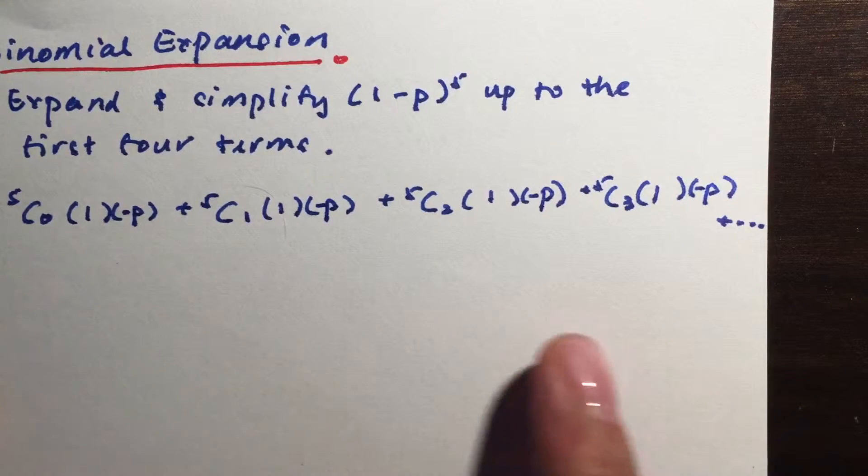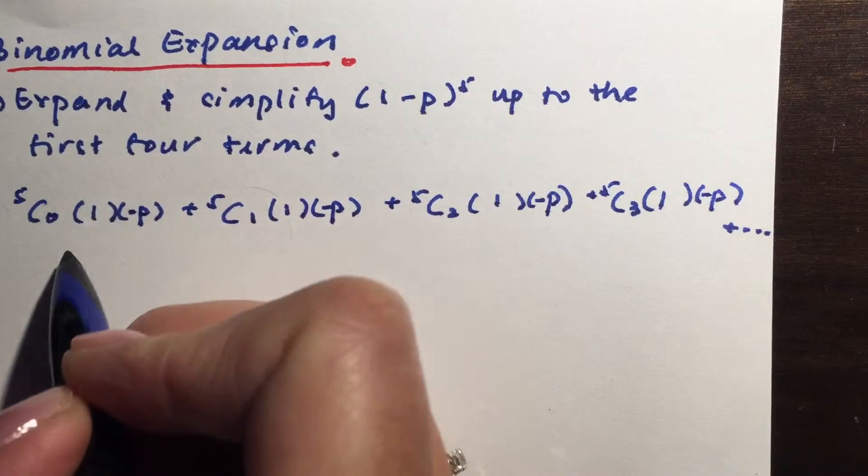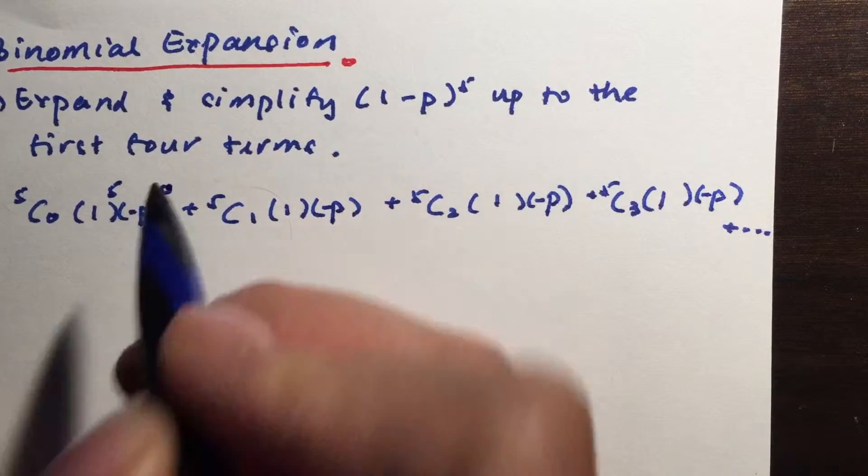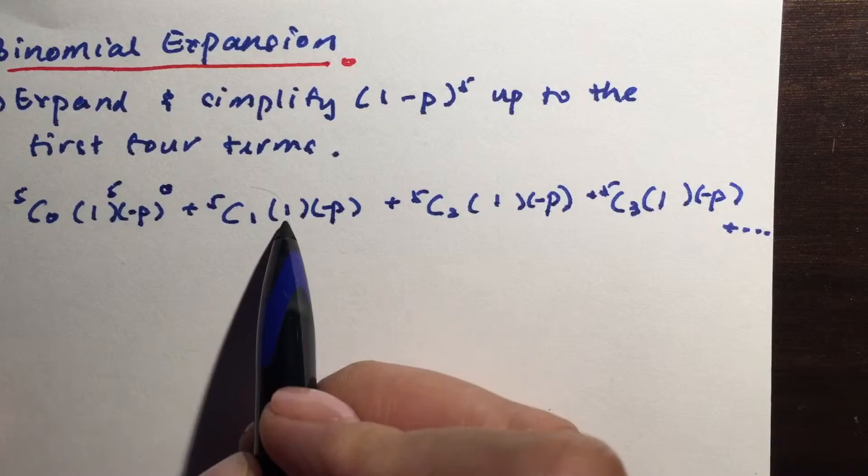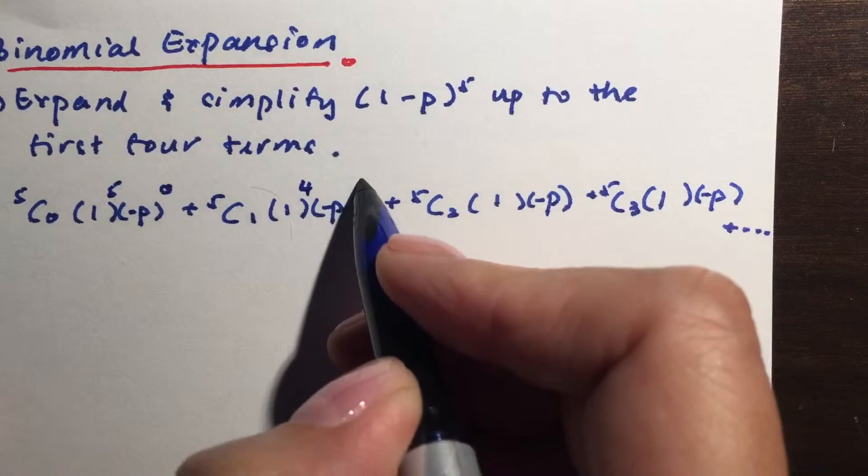Next, in order to complete the expansion, so if this is 5 choose 0, so we will start 1 with the maximum power of 5, and this one will actually have the power of 0. The next one here will be 1 less, which is 4, but this one now becomes 1.